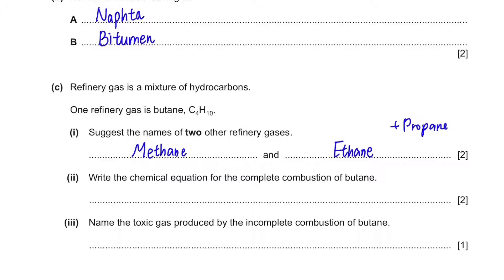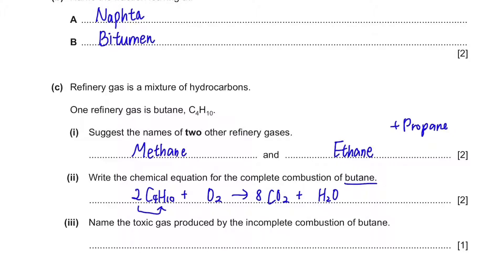Write the chemical equation for the complete combustion of butane. Complete combustion is when there's enough oxygen. Butane is C4H10, and it reacts with oxygen. The products of complete combustion are always carbon dioxide and water. To balance the equation, put a 2 in front of butane to get C8 and H20. That gives 8 carbons on the right, so place 8 in front of CO2, and 20 hydrogens means 10 water molecules. In total there are 26 oxygens on the right, so place 13 in front of O2 on the left. The equation is now balanced: 2C4H10 + 13O2 → 8CO2 + 10H2O.